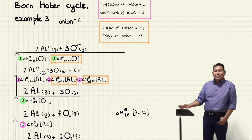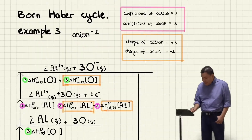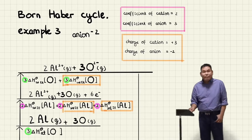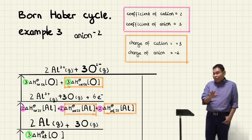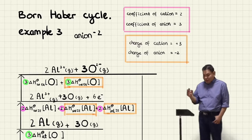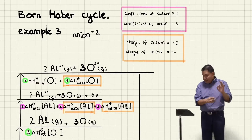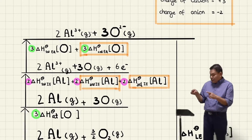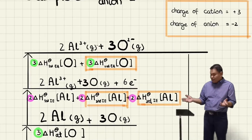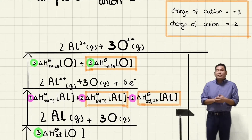I rewrite the cycle so you are aware of possible mistakes, mapping the coefficients with pink and green color. When the delta H involves aluminium, multiply by two; when it involves oxygen, multiply by three. Note the second and third IE of aluminium because aluminium is 3+, and also the second EA of oxygen because oxygen is 2−.